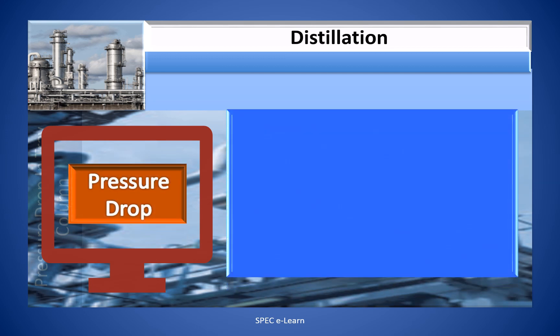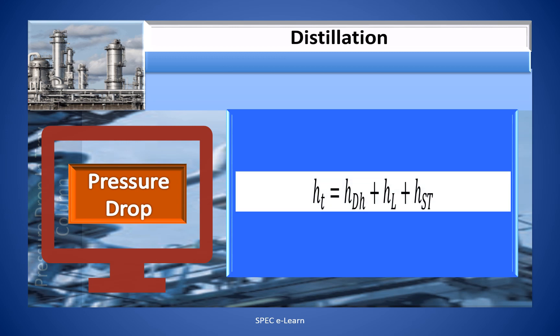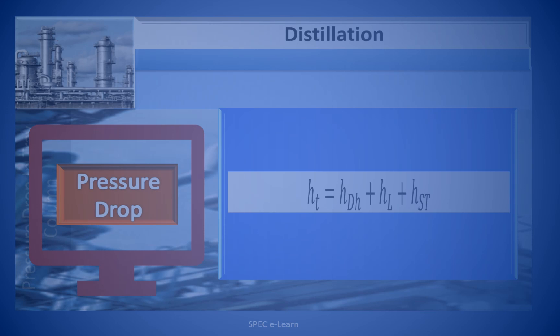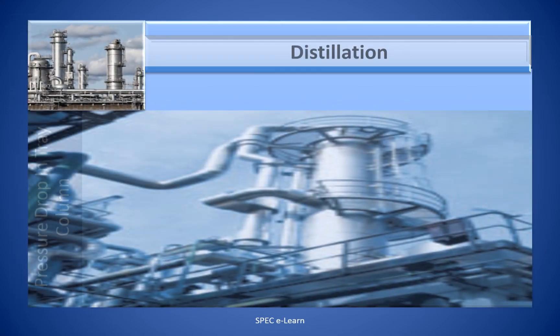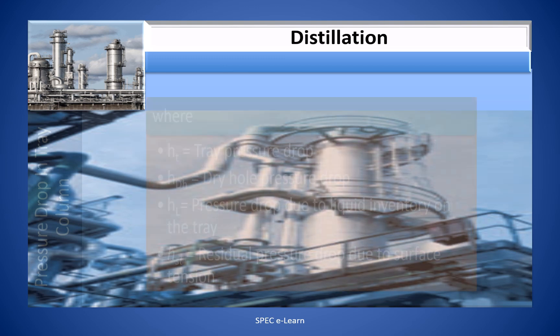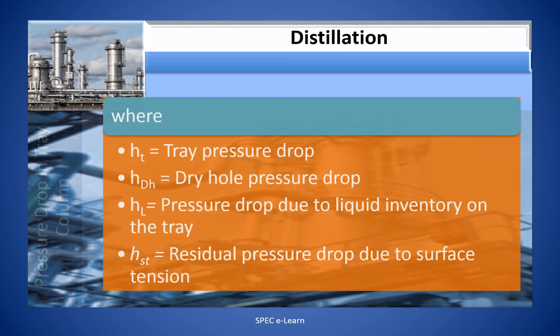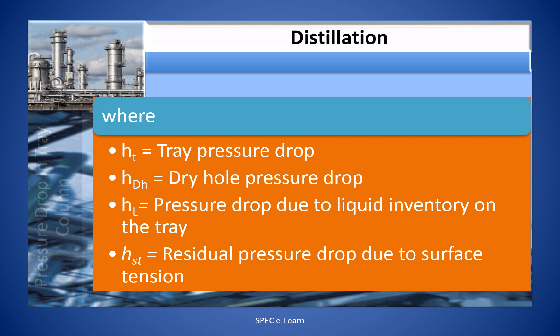The pressure drop across the tray can be represented by the equation shown in this slide. Here, H_T is the tray pressure drop; H_D is the dry hole pressure drop; H_L is the pressure drop due to liquid inventory on the tray; and H_ST is the residual pressure drop due to surface tension. The term H_ST is usually negligible.